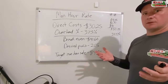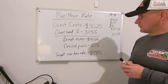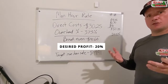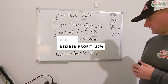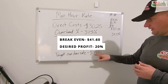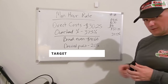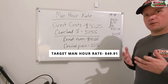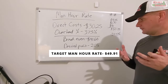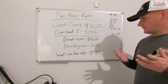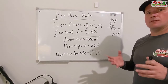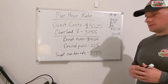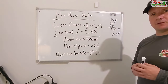But we didn't get in business to break even — we want to make money. So once you have that number, go ahead and add your desired profit margin. In this example we'll use 20%. So we multiply $41.60 times 1.2, and that arrives at our target man hour rate of $49.91 per hour. So if you have a one-man crew going out to work, they need to make basically $500 in a 10-hour window to hit your 20% profit margin. If you have two guys going out, they need to make $1,000 in that same 10 hours.